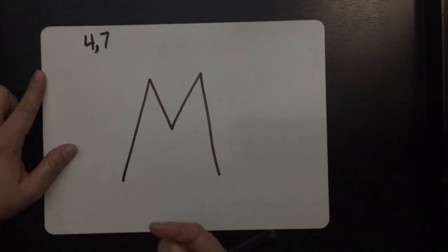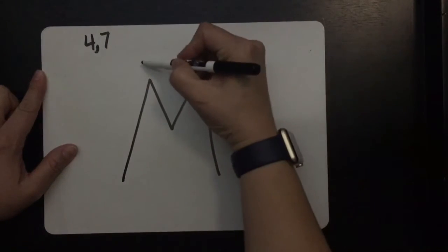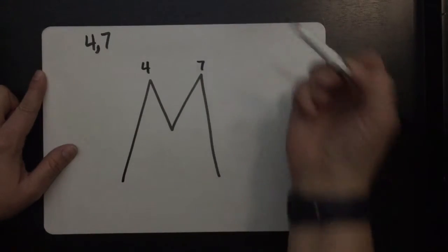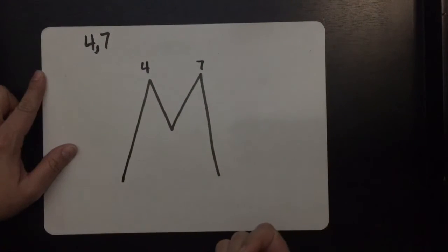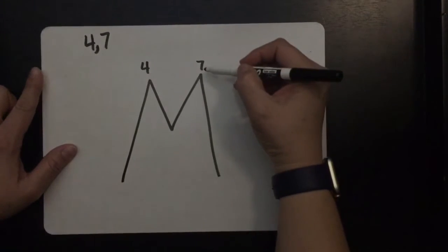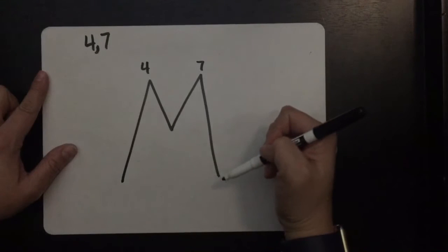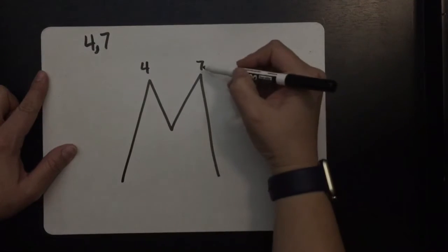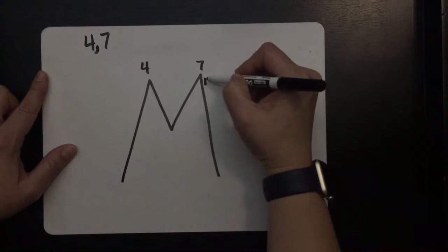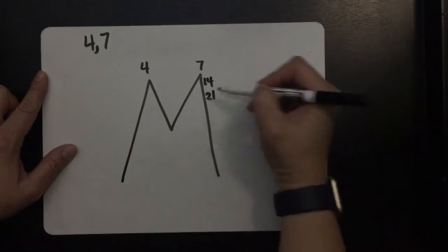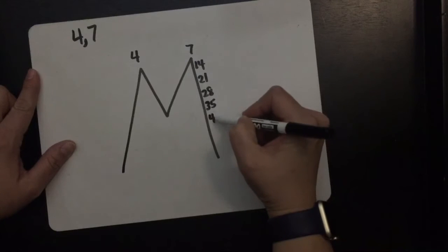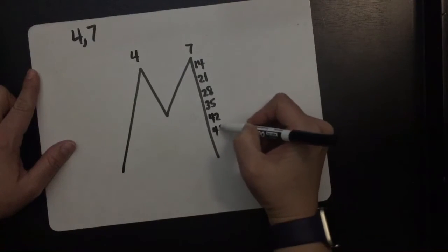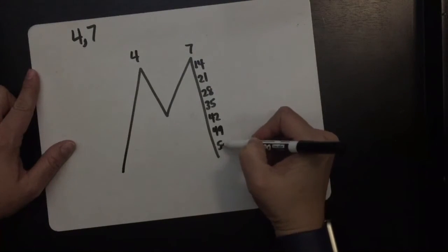So at the top point of the M you just write the two numbers that you're working with. And down the sides you're going to list the multiples. Finding multiples is like skip counting. So down this side with the 7, you're going to skip count by sevens.